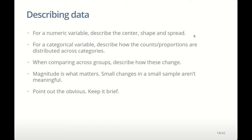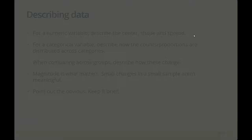A key thing when describing data and writing about what you see in a plot is that magnitude is what matters. Small changes may not be important, so don't focus on them. It's really easy to get fixated on small changes and report on them when those changes may just be a result of a small dataset — the direction of any effect might be completely different with a different sample. What I try to do is squint at the picture: if I can't see anything, it's not worth writing about.